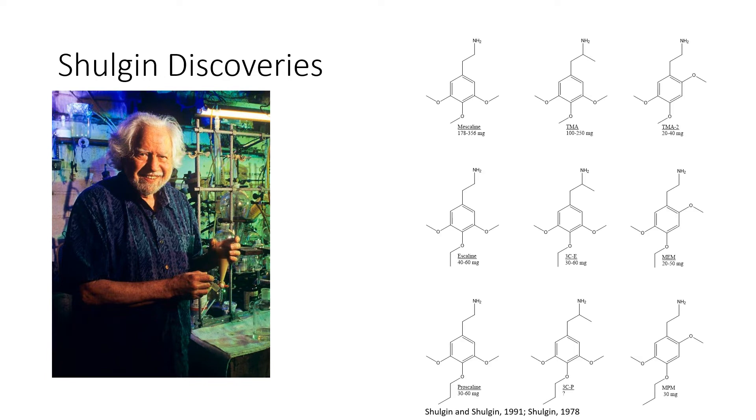Here were some of his discoveries in the book. The compound in the upper left hand corner is mescaline, what the focus of this publication is about. Its active dose in human beings is 178 to 356 mg. The compound to the right of mescaline is called TMA. This has an active dose of 100 to 250 mg, indicating that it is more potent because less of the drug produces a psychedelic effect in humans.